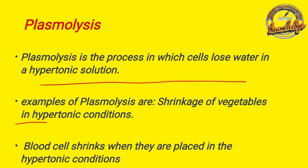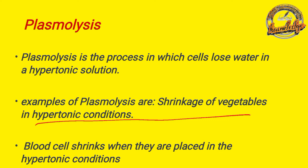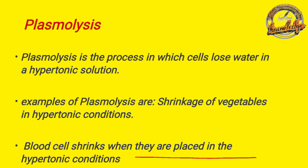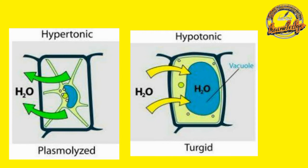For example, in plasmolysis, the cell shrinks. Like a vegetable — you have a large shape of the vegetable. We also use blood cells as an example; the blood cells become shrunken. Shrink means that the plant is going to shrink.